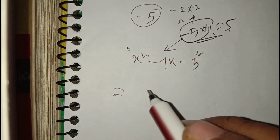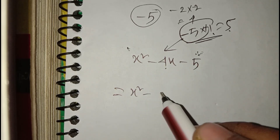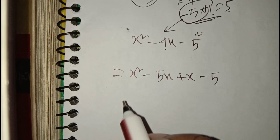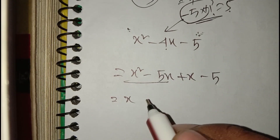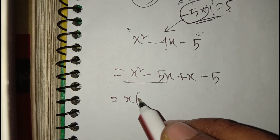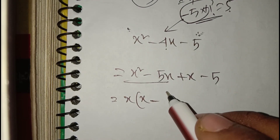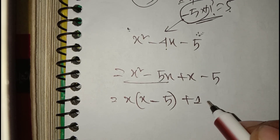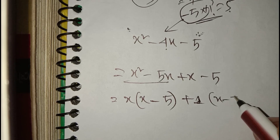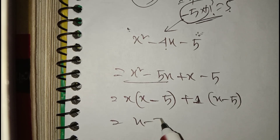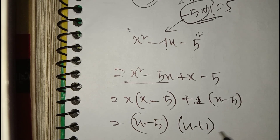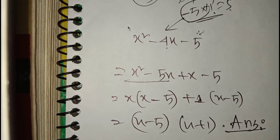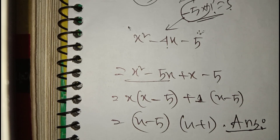So we rewrite as x squared minus five x plus x minus five. Now factorizing: x is common from x squared minus five x, giving x times (x minus five), and there is no common factor other than one for the remaining terms, giving one times (x minus five). So the factors are (x minus five) and (x plus one). This is the easy factorization process — hope you like this and subscribe to my channel.